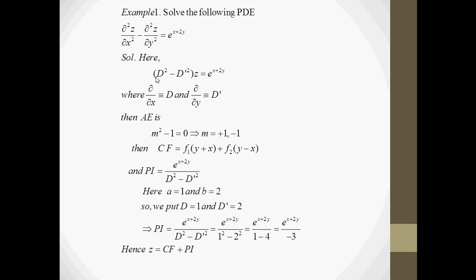Now we find the auxiliary equation by putting d equal to m and d' equal to 1: m² minus 1 equals 0. The roots of this auxiliary equation are 1 and minus 1. Since the roots are real and distinct, the complementary function is f₁(y + x) plus f₂(y minus x). Now we find the particular integral.